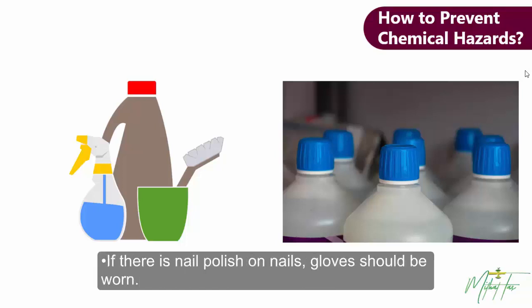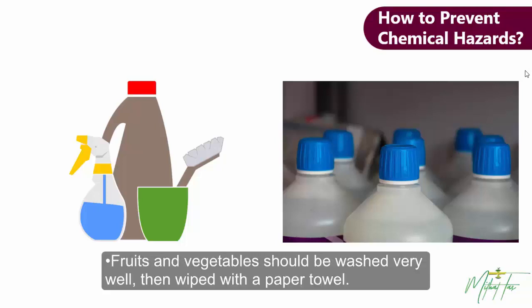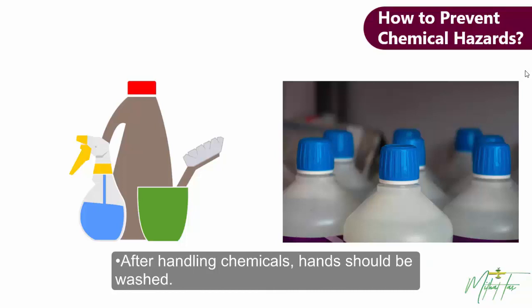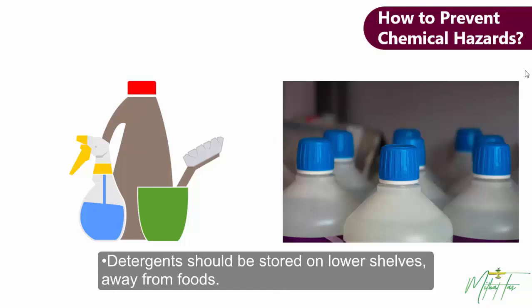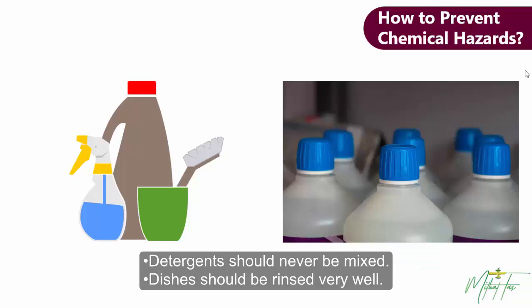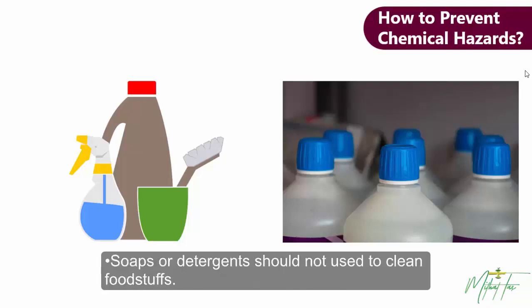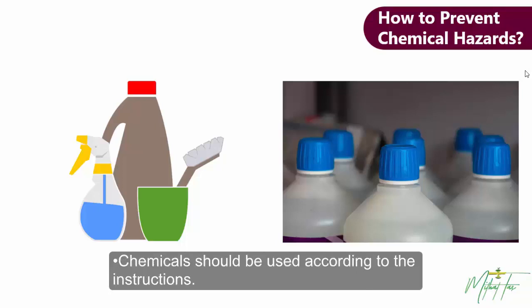If there is nail polish on nails, gloves should be worn. Fruits and vegetables should be washed very well, then wiped with a paper towel. After handling chemicals, hands should be washed. Detergents should be stored on lower shelves away from food. Detergents should never be mixed. Dishes should be rinsed very well. Soaps or detergents shouldn't be used to clean foodstuffs. Chemicals should be used according to the instructions.